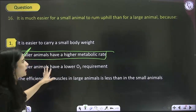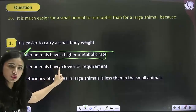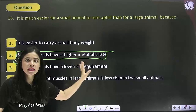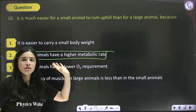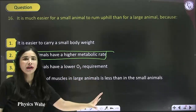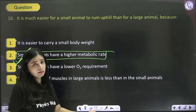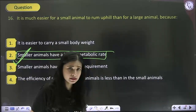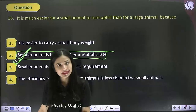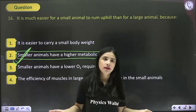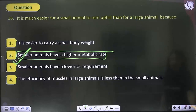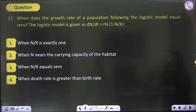So the answer becomes option 2. It all depends on BMR: more BMR means more glucose breakdown, more ATP, and a more active body. A heavy body means less BMR, less glucose breakdown, less ATP production, and a more lethargic body.